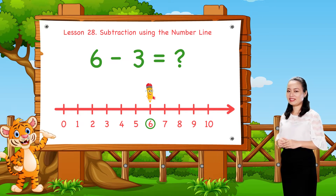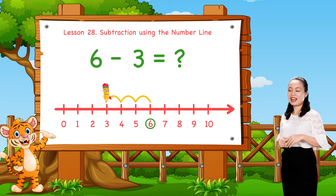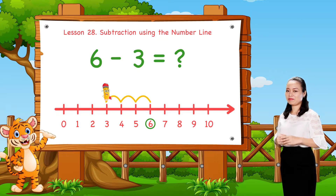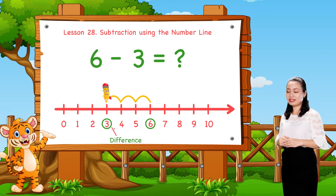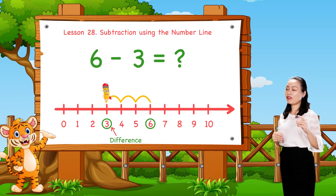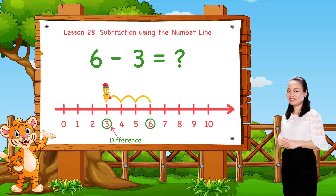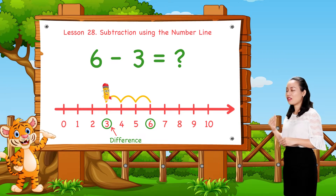Then jump 3 numbers to the left. Then see the number where we stop. This number is the difference. Here we stop at number 3. Therefore,